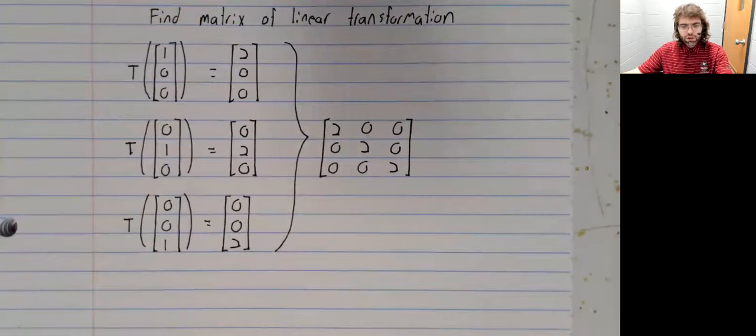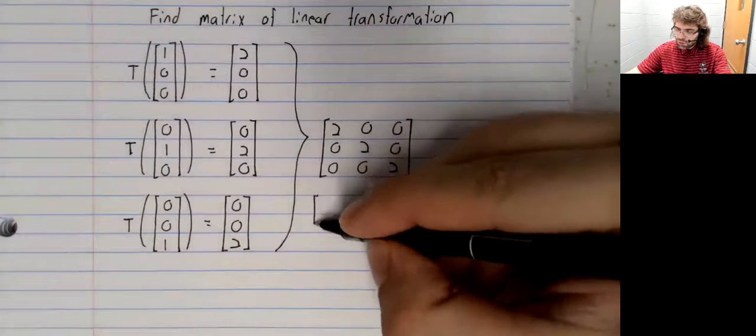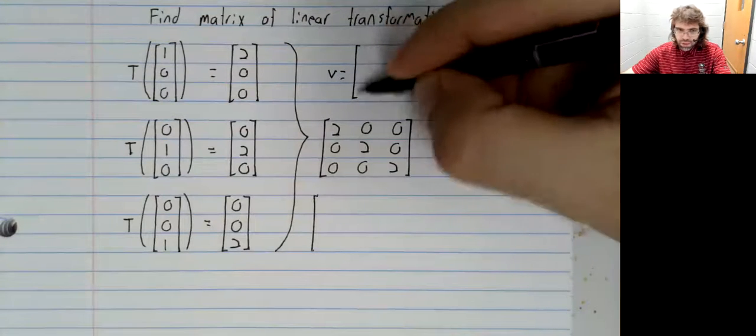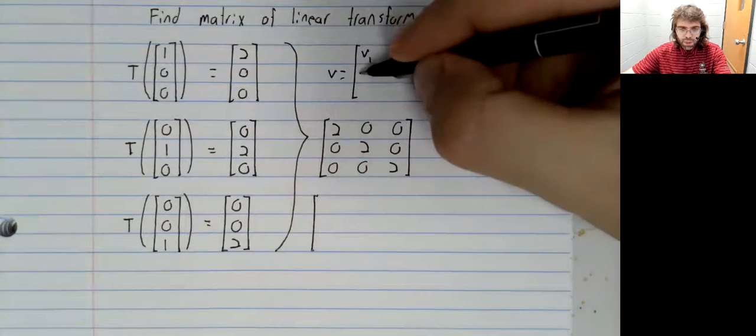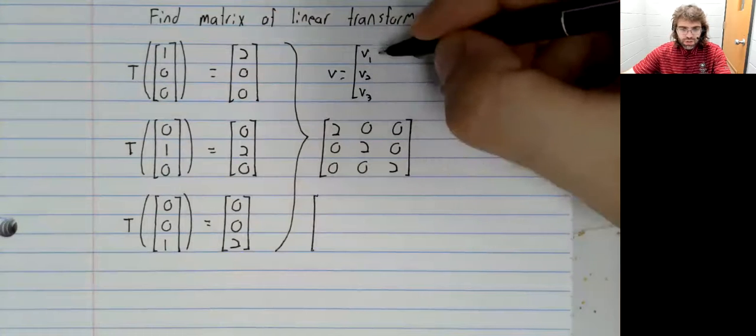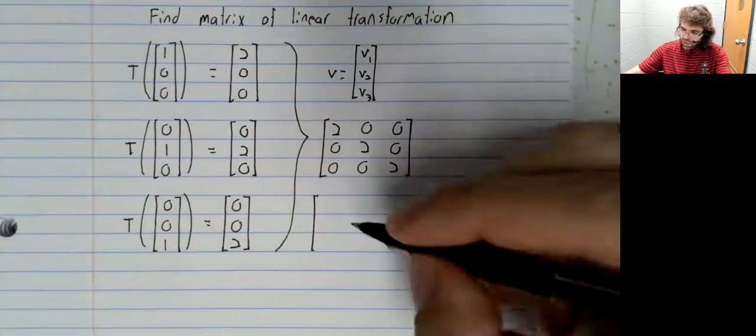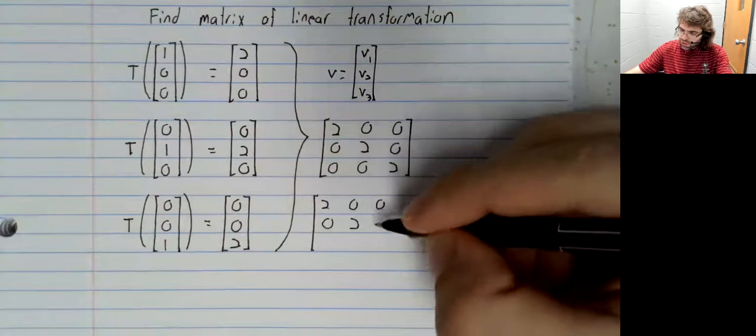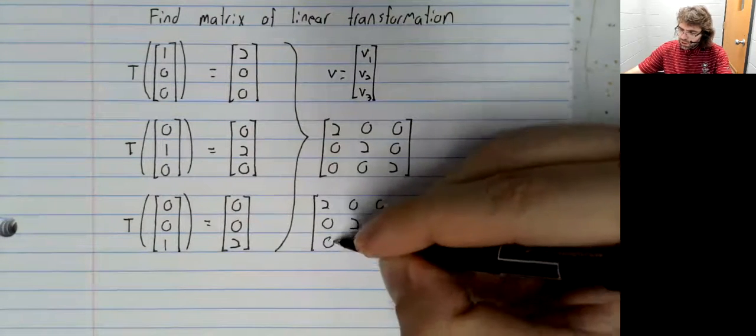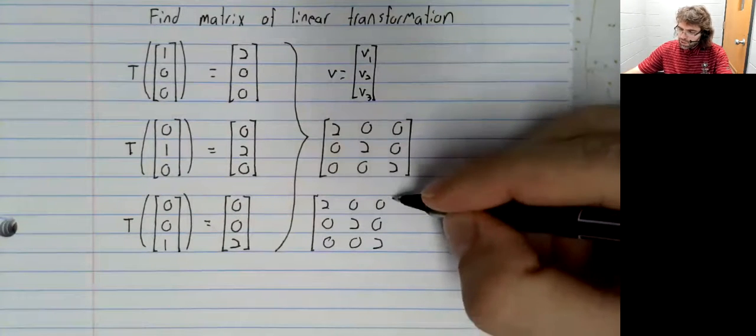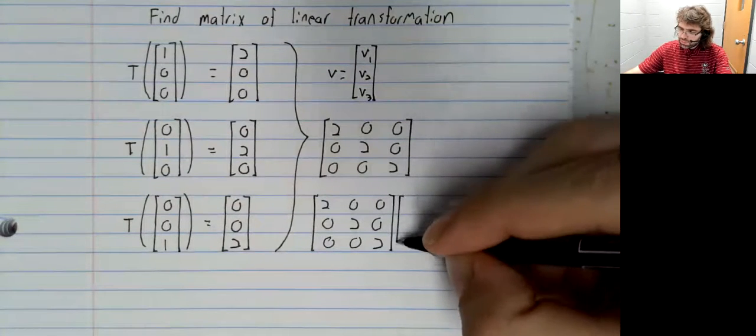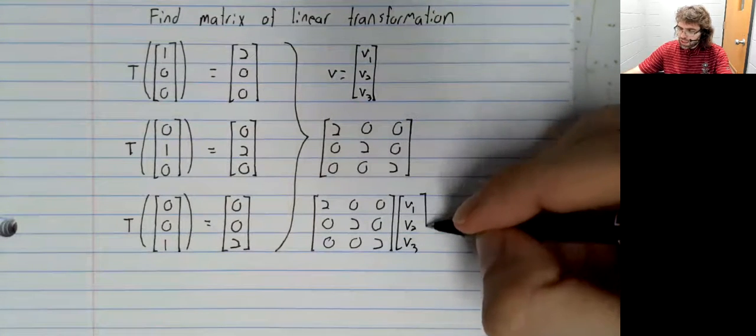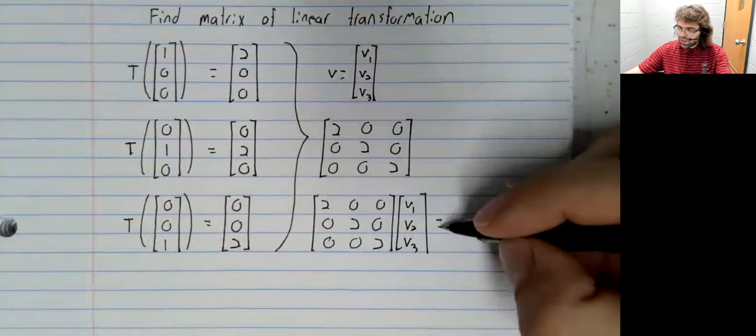Let's verify that that's true. That's V, V1, V2, V3. And let's see what happens when we take V and multiply it by this matrix.